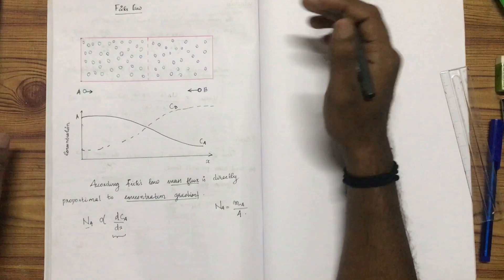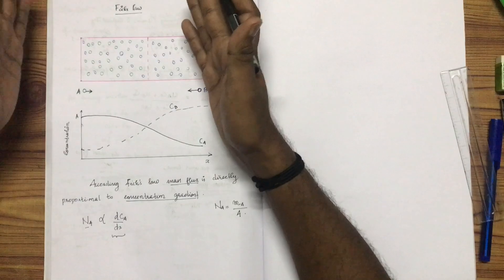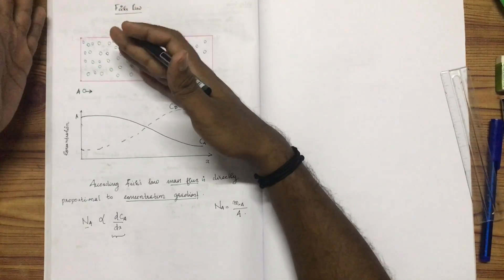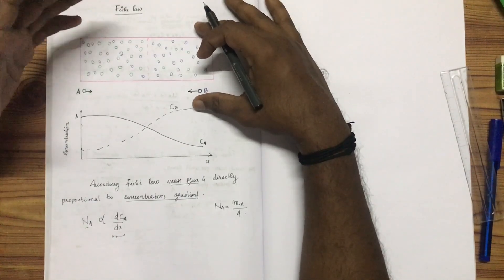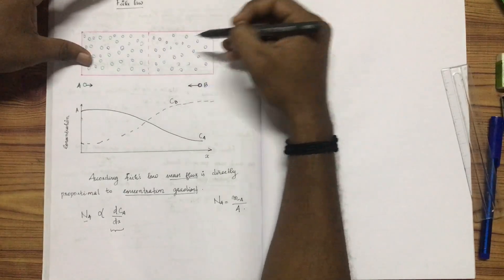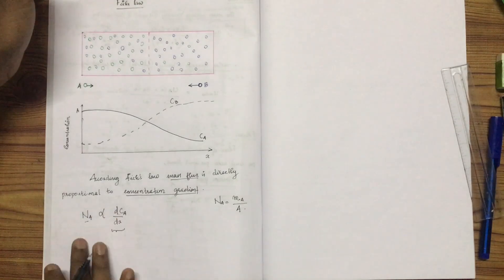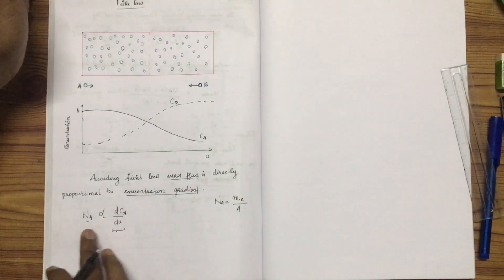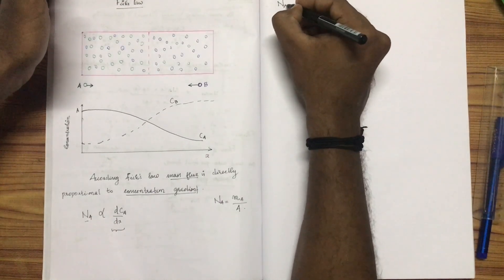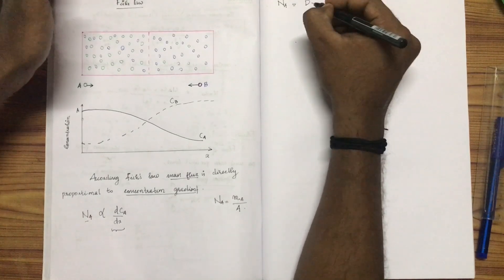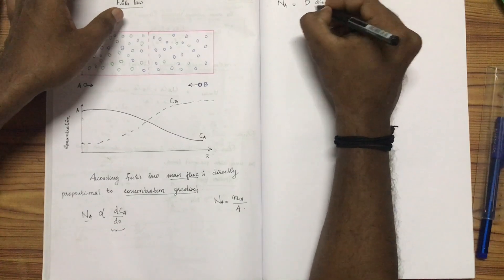Now consider a chamber which is separated by a membrane at the center. In the left side of the chamber we have high concentration of A, and in the right side we have higher concentration of B. Since there is a concentration difference, mass diffusion will occur. According to Fick's law, mass flux is directly proportional to the concentration gradient. To remove the proportionality, we introduce a constant D, so: mass flux of A equals negative D_AB times dC_A by dx.